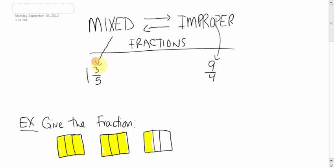Mixed fractions are fractions like this, where you have a whole number and a fraction mixed together. The way you would say this would be you have one and three-fifths. One whole number and three-fifths of a number.